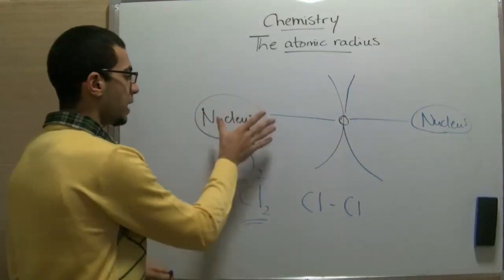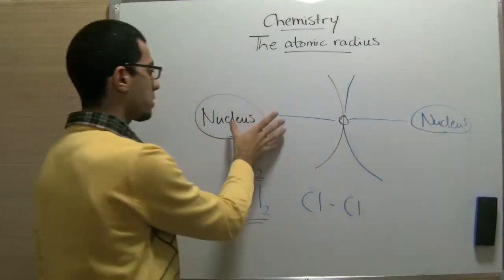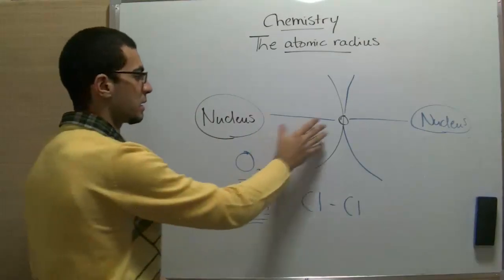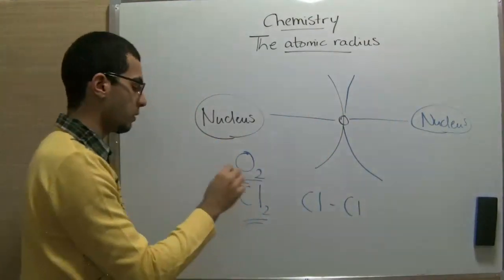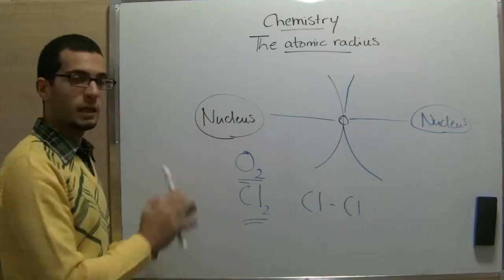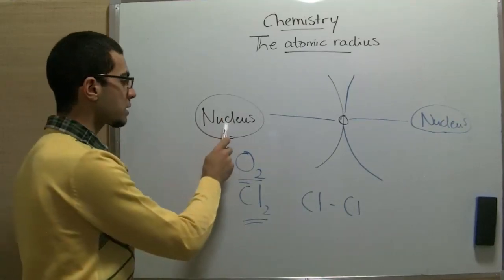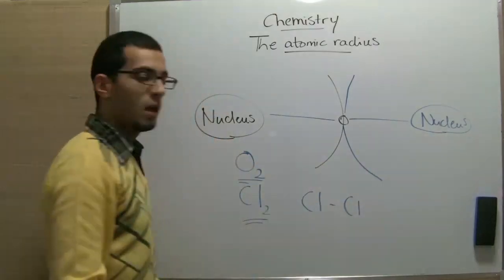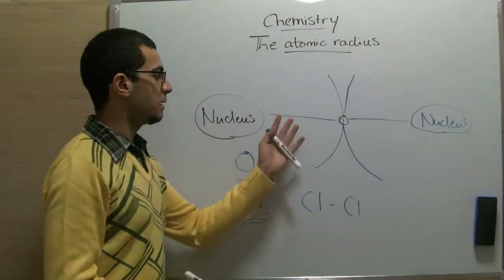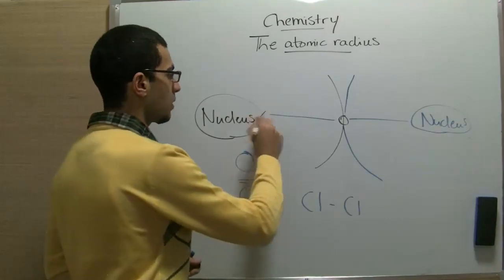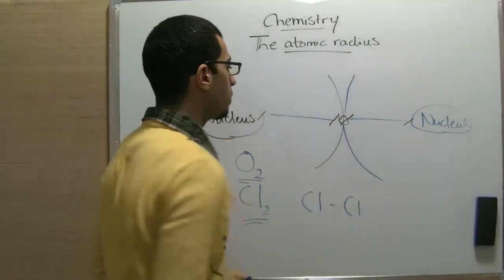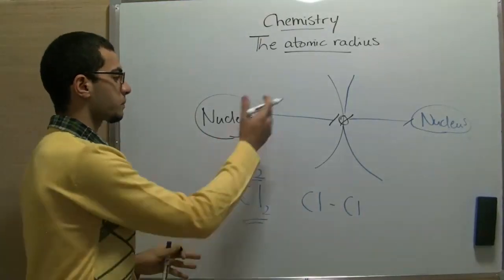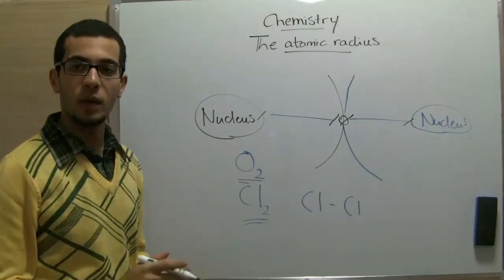Since this is a chlorine atom bonded to another chlorine atom, or an oxygen atom bonded to another oxygen atom, the distance from each nucleus to its outermost electron is the same. What we do is measure the total distance between the two nuclei, and then divide it by two to get the atomic radius.